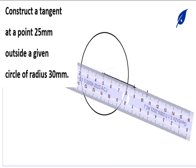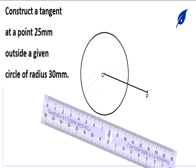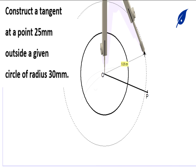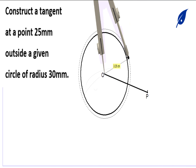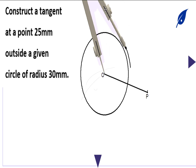Now connect the point O to P using a ruler to form a straight line. After connecting them, we have our line OP which we'll use to create our tangent. From this line we'll move to the next step, which is to bisect the line OP.